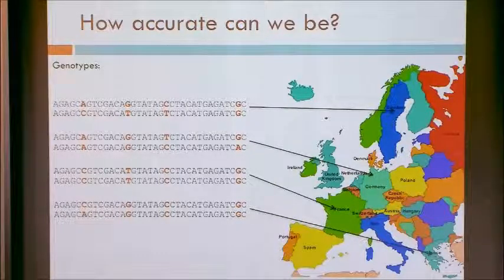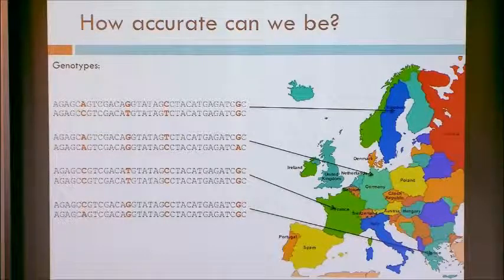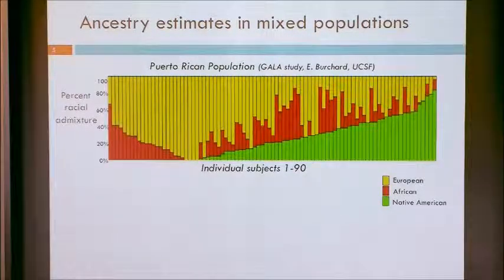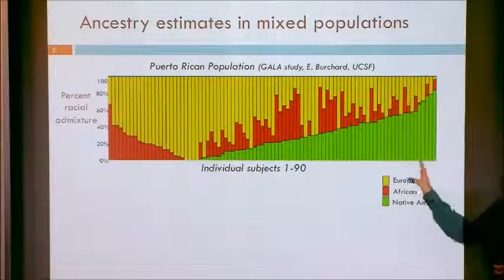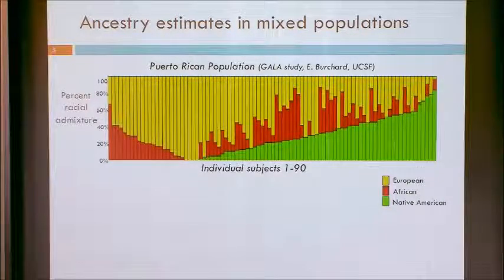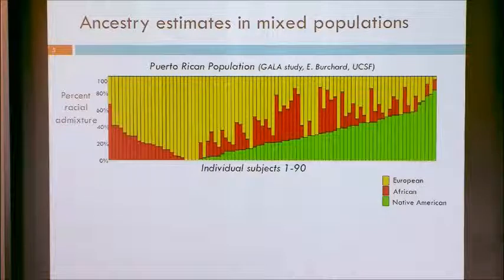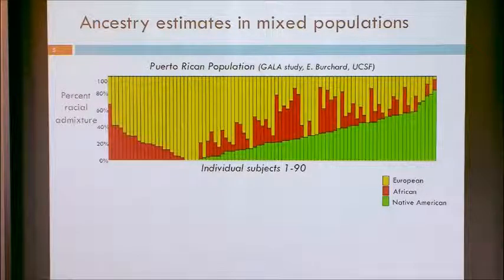Before diving into the methods, I'd like to say a few words about why I and many others think this is an important problem — it's been studied quite a bit in the last 15 years. As motivation, here's a picture some of you may have seen before. This is data from a study using the program STRUCTURE by Jonathan Pritchard. You have 90 samples and each has a rectangle with three colors representing different ancestries. We're looking at the Puerto Rican population.